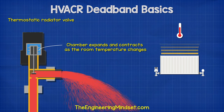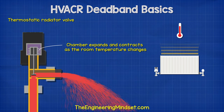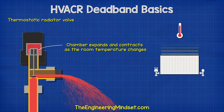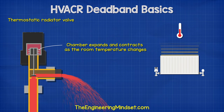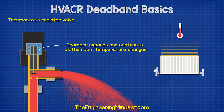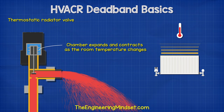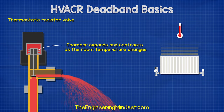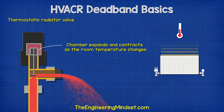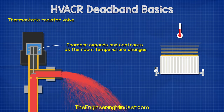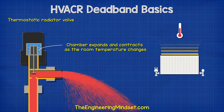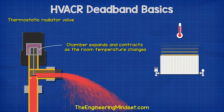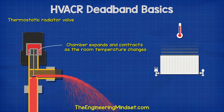The thermostatic radiator valve uses a chamber filled with a wax, liquid, or gas, which expands and contracts as the room temperature changes. This controls the valve position — the hotter it gets, the further it closes the valve; the colder it gets, the more it opens the valve.